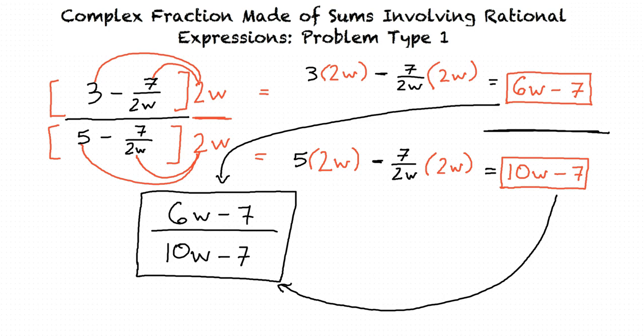So, because there was a fraction in both the numerator and denominator, and they both had a denominator of 2w, I was able to multiply the numerator and denominator by 2w to cancel it out. When we have problems like this, we look for ways to cancel out the denominators of the fractions in the numerator and denominator without altering the value of the original fraction. If that can't be done, then we find a common denominator in the numerator and denominator of the original problem in order to simplify.